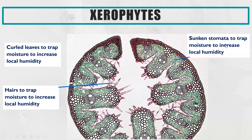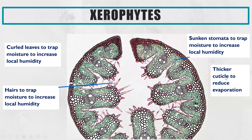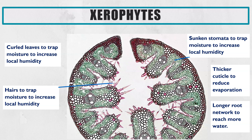Another feature is that the stomata are sunken in. You can see lots of folds in the leaf, and within each fold there's a stomata sunken in deeper than on other plants — for exactly the same reason: it helps trap moisture, keeps it more humid, and reduces evaporation. There are other features not visible on this image: they also have a thicker cuticle to prevent evaporation, and a longer network of roots so the plant can reach water at greater distances.